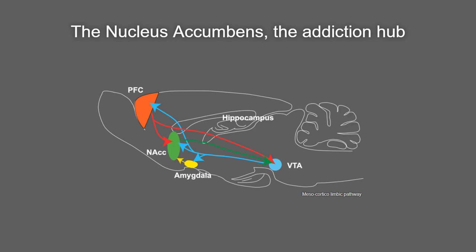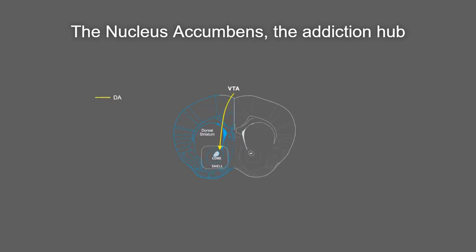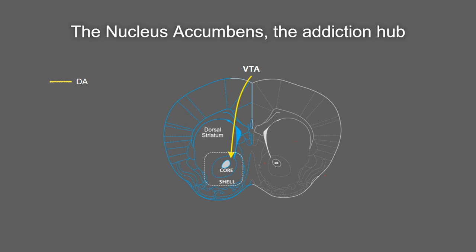The nucleus accumbens is an addiction hub. Shown here in green, it is part of the mesocorticolimbic pathway that originates in the ventral tegmental area, shown in blue. The ventral tegmental area extends dopaminergic projections to the nucleus accumbens, but also to other regions like the prefrontal cortex in red, the amygdala in yellow, and also the hippocampus. Here is a coronal section showing the dorsal striatum and, ventral to it, the nucleus accumbens, which is typically divided into the core and the shell region. The core is anatomically associated with the dorsal striatum; in contrast, the shell is typically associated with the extended amygdala.